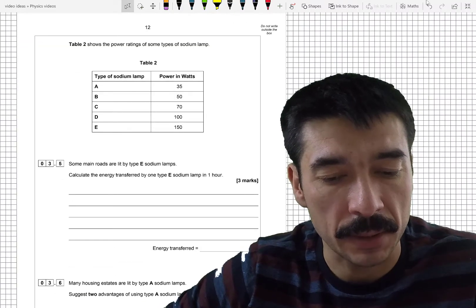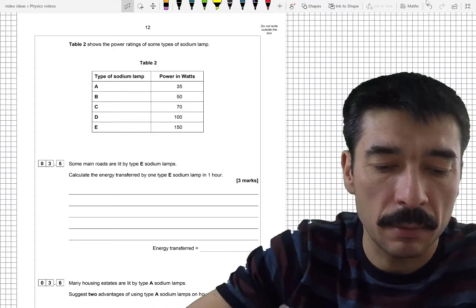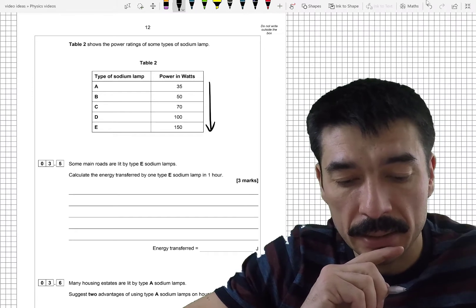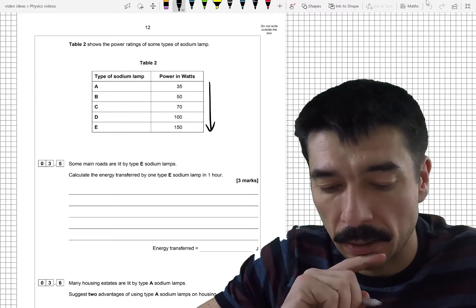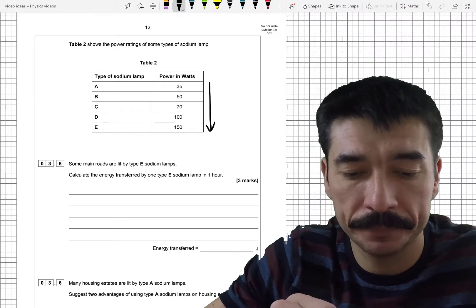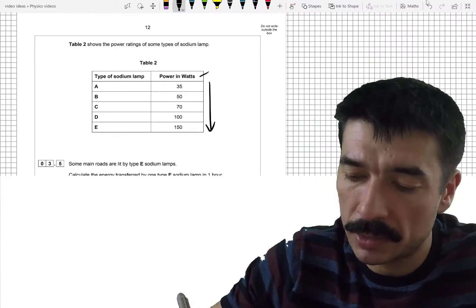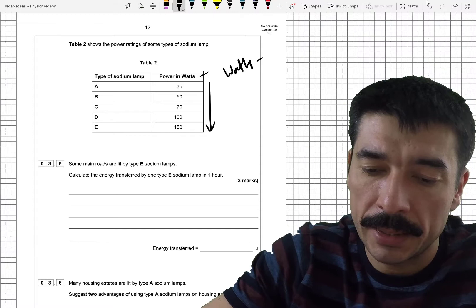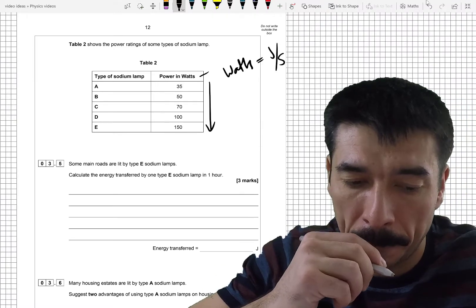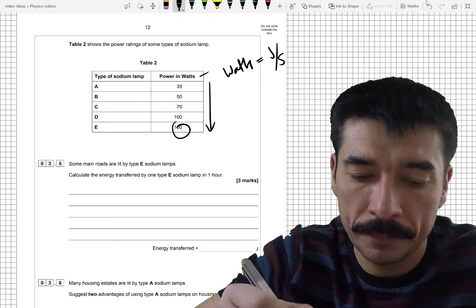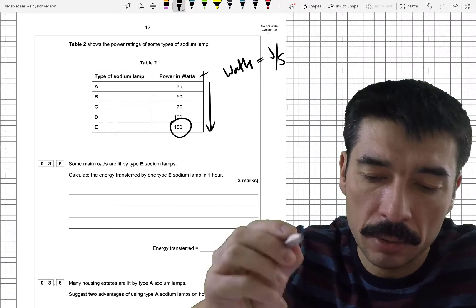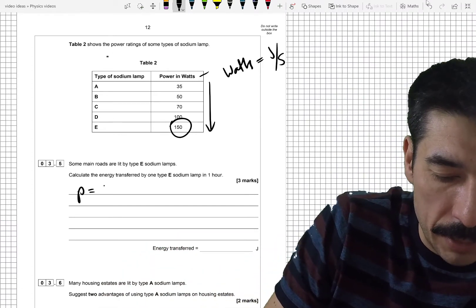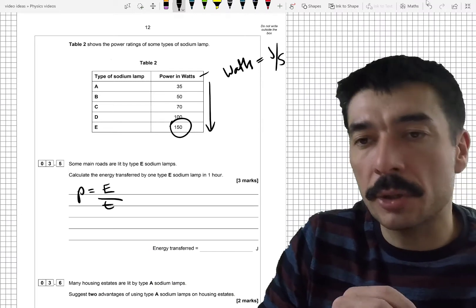Table two shows the power rating of some types of sodium lamp. A to E, and they just get larger and larger power ratings. Some main roads are lit by type E sodium lamps. Calculate the energy transferred by one type E sodium lamp in one hour. Okay. You're not given an equation here. But you're told power in watts, and I know, or I have always talked about it like this, watts is the same as joules every second. So, if you're using type E, you're using 150 joules every second.